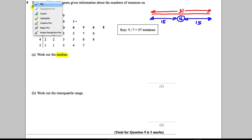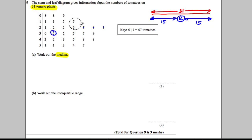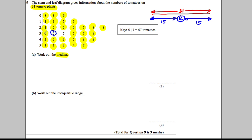Another method students like to use: highlight the first number and the last, then the next first and next last, and keep going inward — don't cross out with a pen as you'll need to read the numbers. You work inward from both ends until one number is left in the middle, which gives us 32. So the median is 32 tomatoes — not 2, since 3|2 means 32.